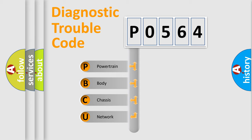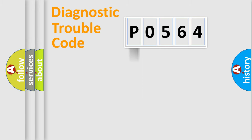We divide the electric system of automobile into four basic units: Powertrain, Body, Chassis, and Network. This distribution is defined in the first character code.